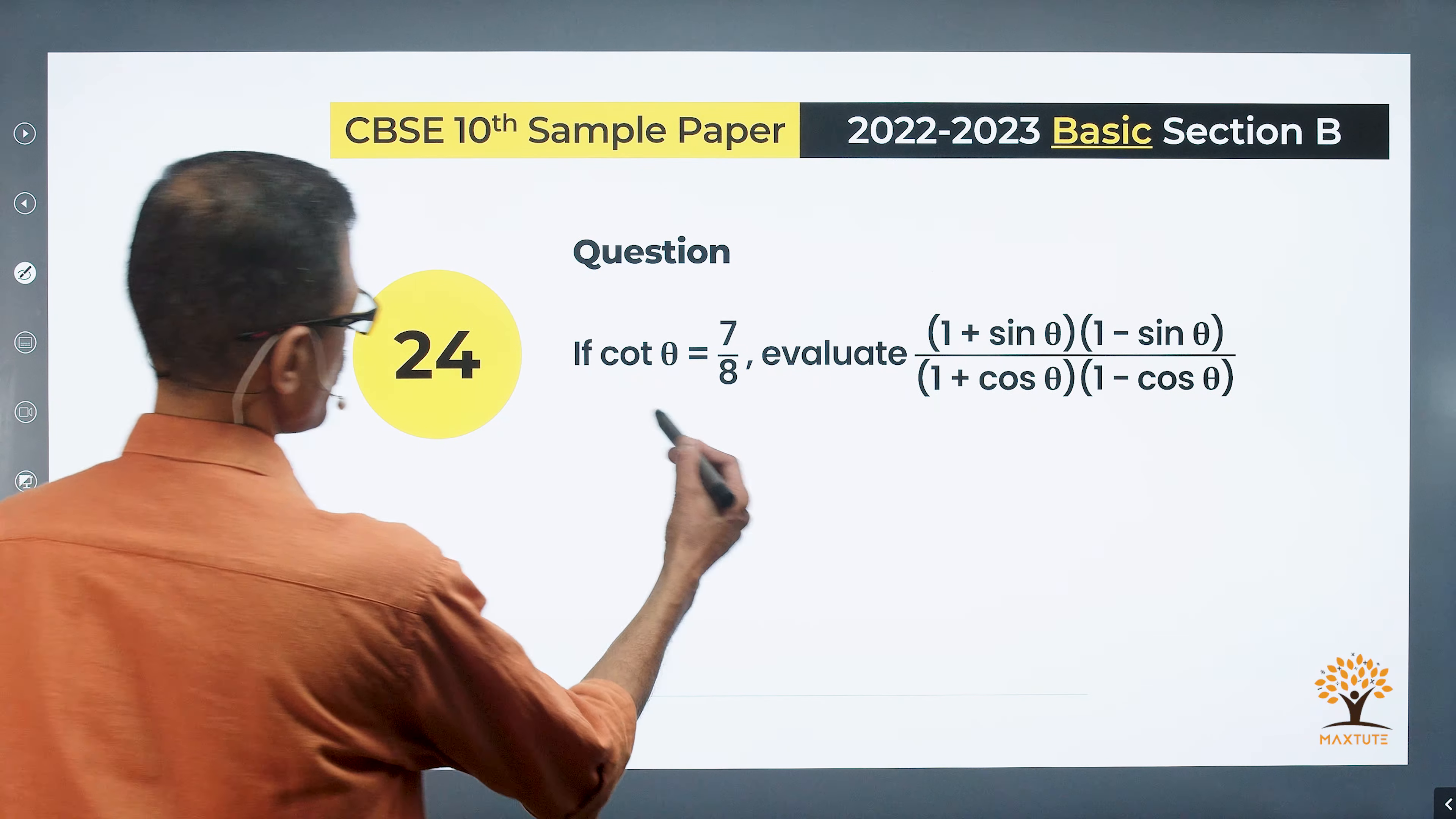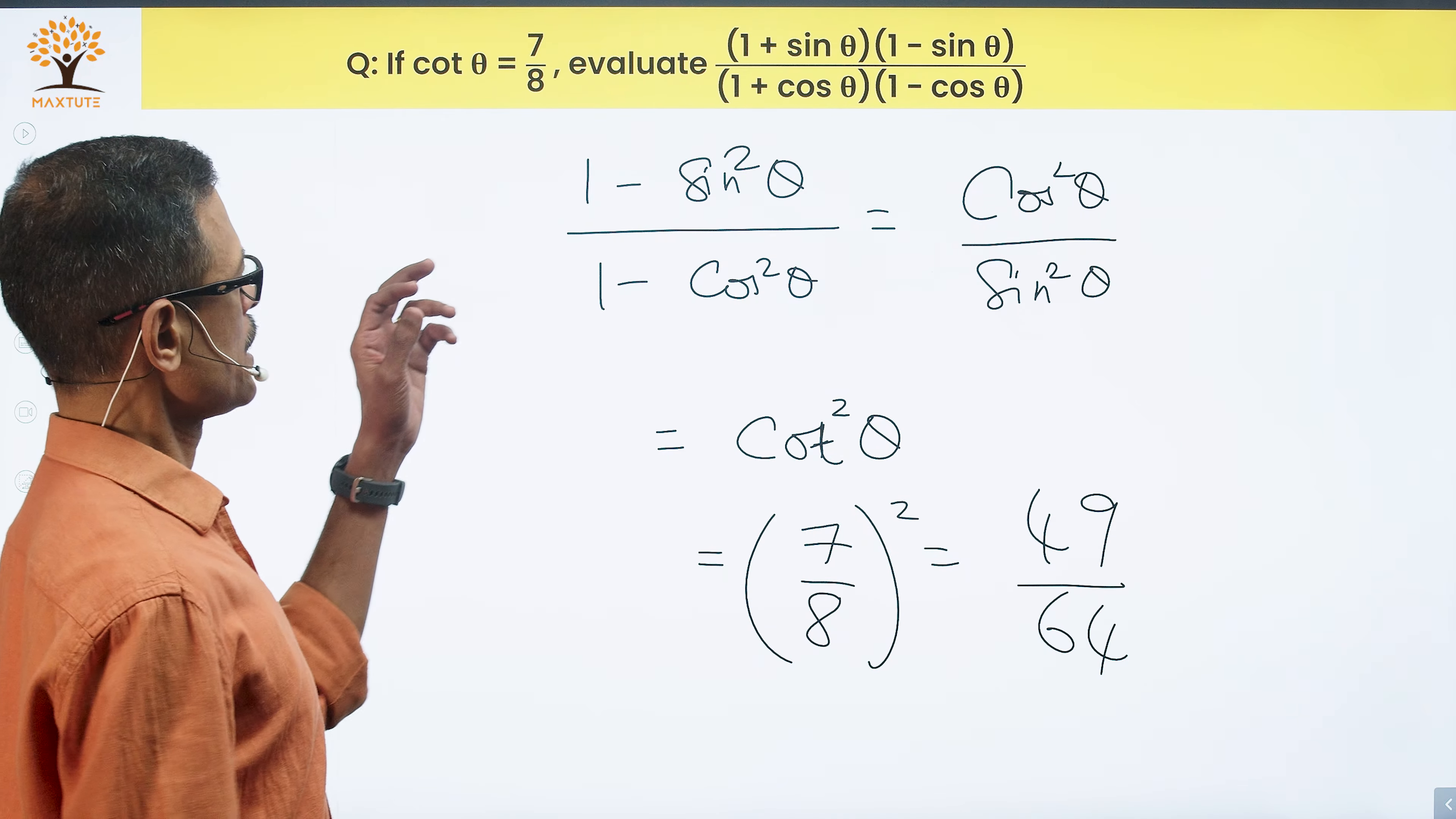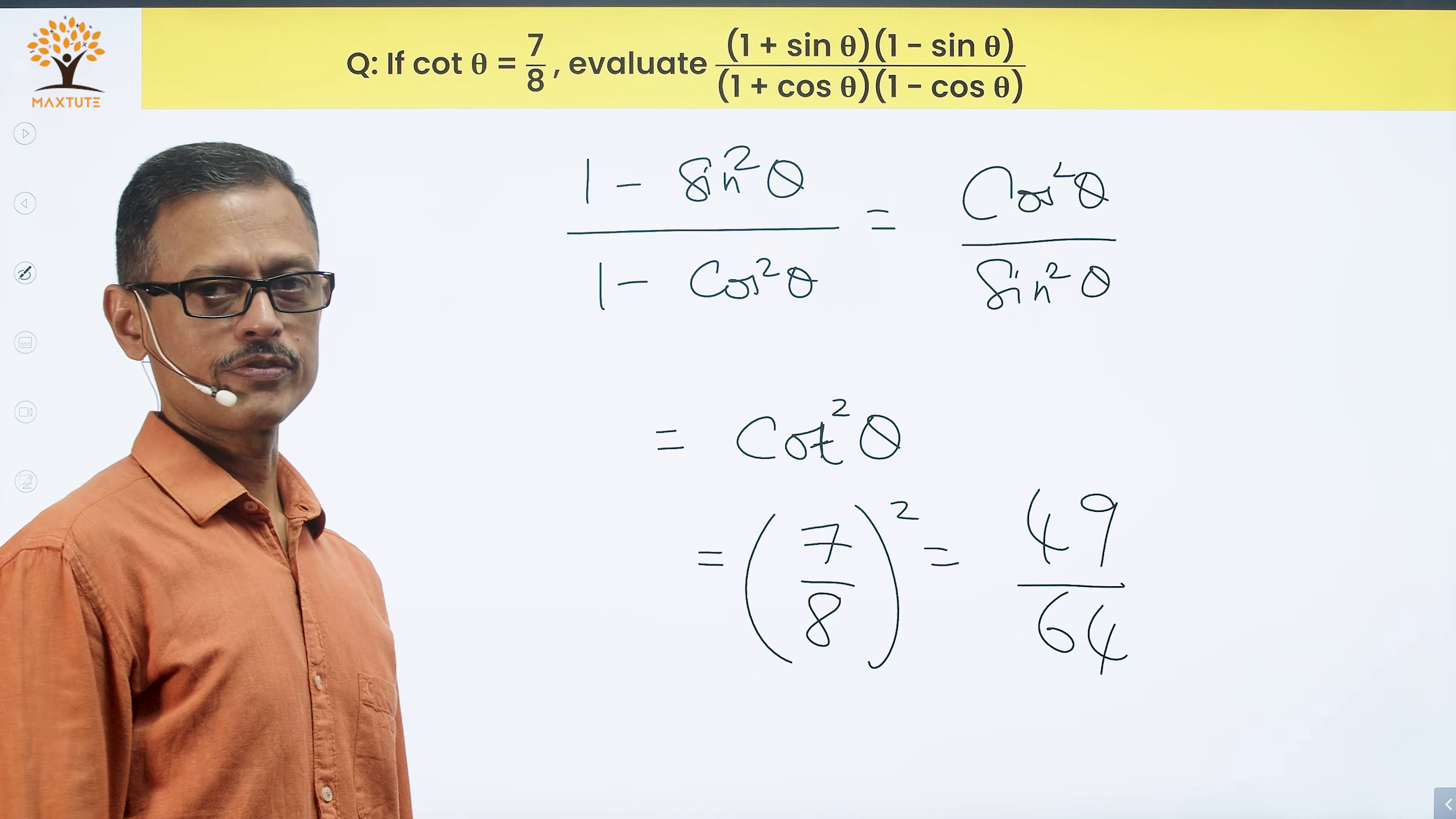Cot theta is equal to 7 by 8. Therefore, cot squared theta will be equal to 7 by 8 the whole squared, which is equal to 49 divided by 64. So what's the value of this expression? The value of this expression is 49 by 64.